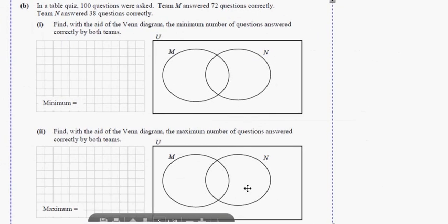In a table quiz, 100 questions were asked. Team M answered 72 questions correctly. Team N answered 38 questions correctly. Find with the aid of a Venn diagram the minimum number of questions answered correctly by both teams.